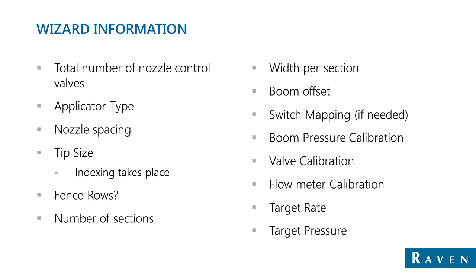This is the information required in the Hawkeye Wizard: basic information including number of nozzles, nozzle spacing, tip size, boom pressure, and valve and meter calibration numbers. You also need to type in a target rate and target pressure. All of this information is used to create the boom setup and calculate that speed range mentioned earlier. Now we'll take a look at how to set up the wizard and machine profile on an actual Viper 4.